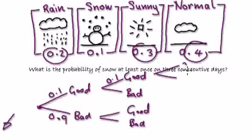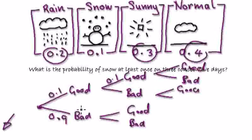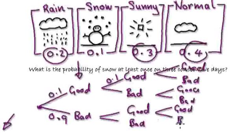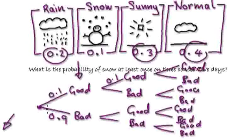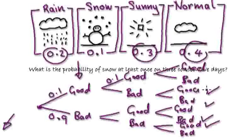And then this branches out even further. So good, bad. And then this one here would be good, because we've got three days here. This represents our first day, this represents our second day, this represents our third day. So bad here. So good, bad. And then we've got good again and then bad. Remember, she just wants to be able to play in the snow at least once. It's everything else apart from bad, bad, bad.